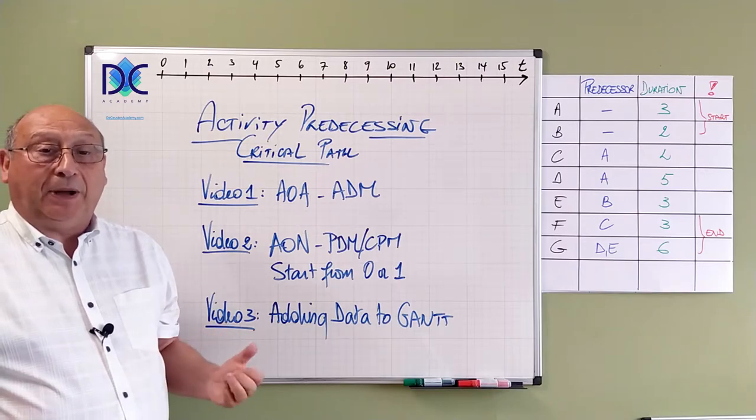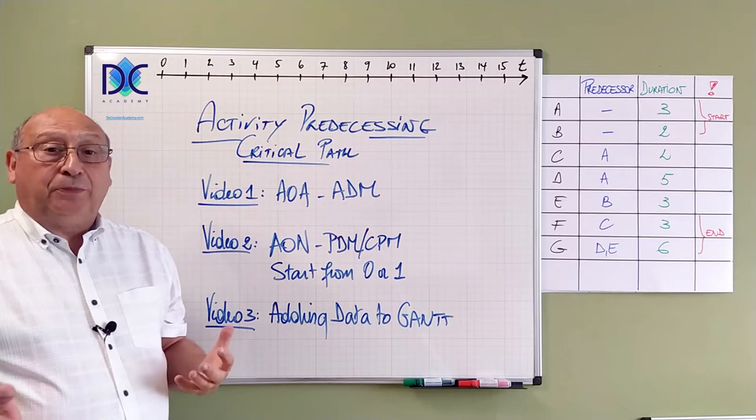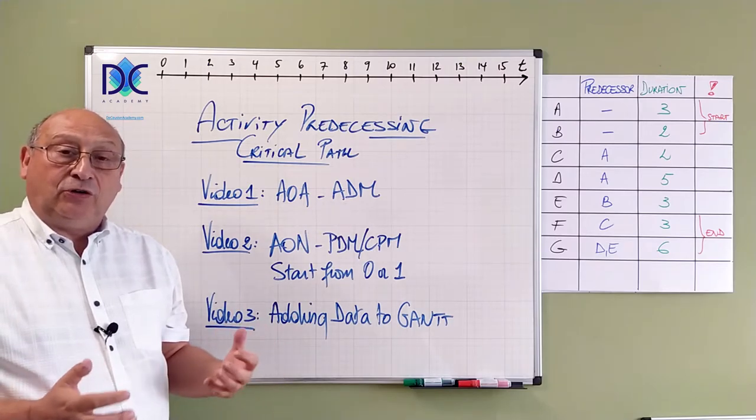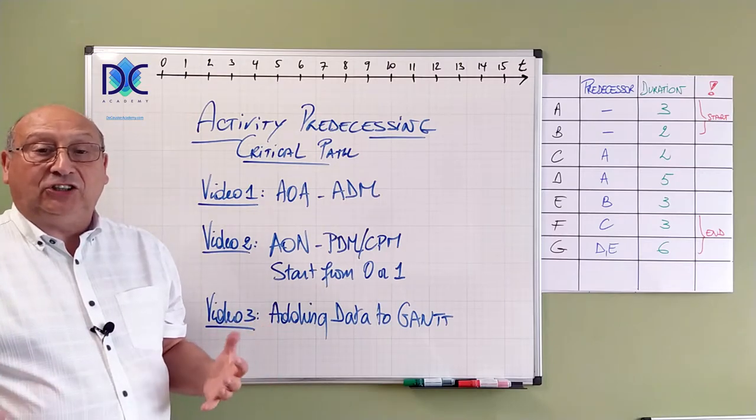Which is also called the critical path method. And here I will compare the two possibilities. Do I start from zero? Do I start from one? And what are basically the differences? What are the advantages? And what are the disadvantages?